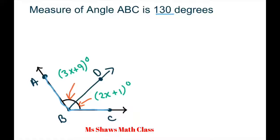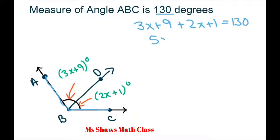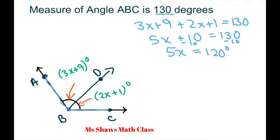We simply add our two values: 3x plus 9 plus 2x plus 1 equals 130. You get 5x plus 10 equals 130. Subtract 10 from both sides to get 5x equals 120. Divide both sides by 5 and you get x equals 24.